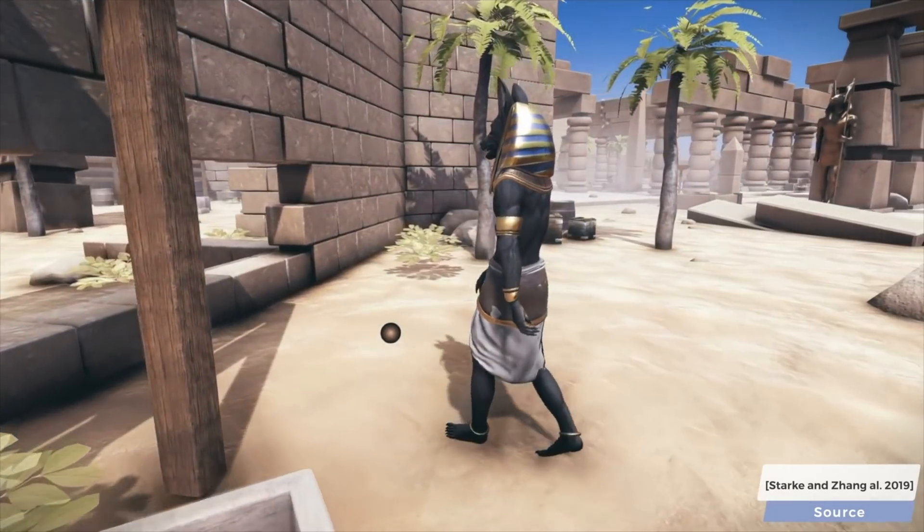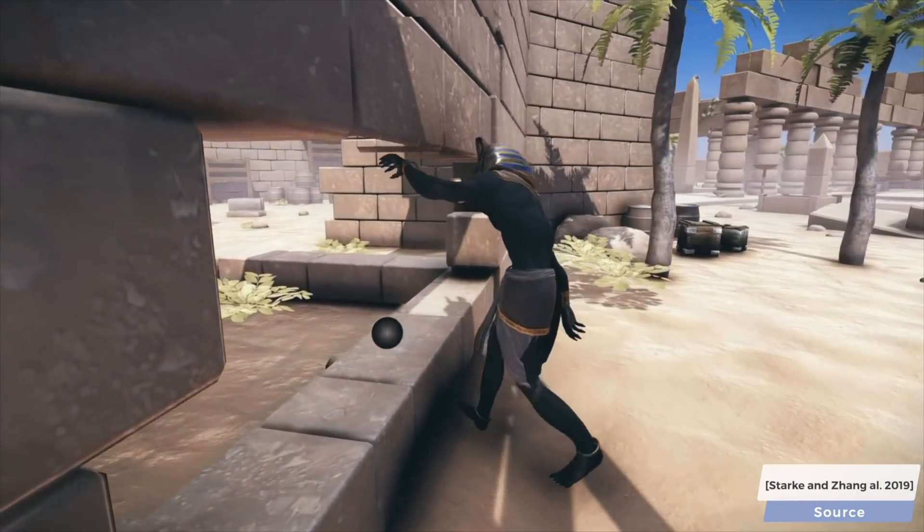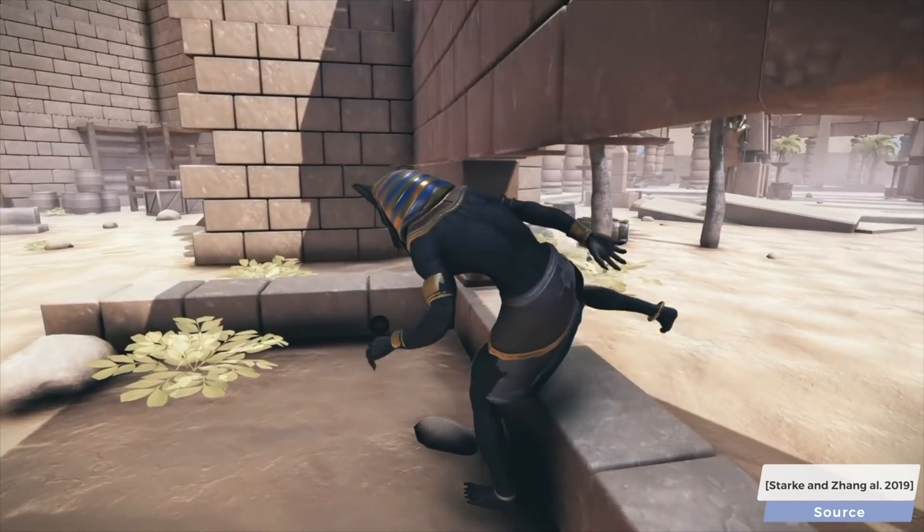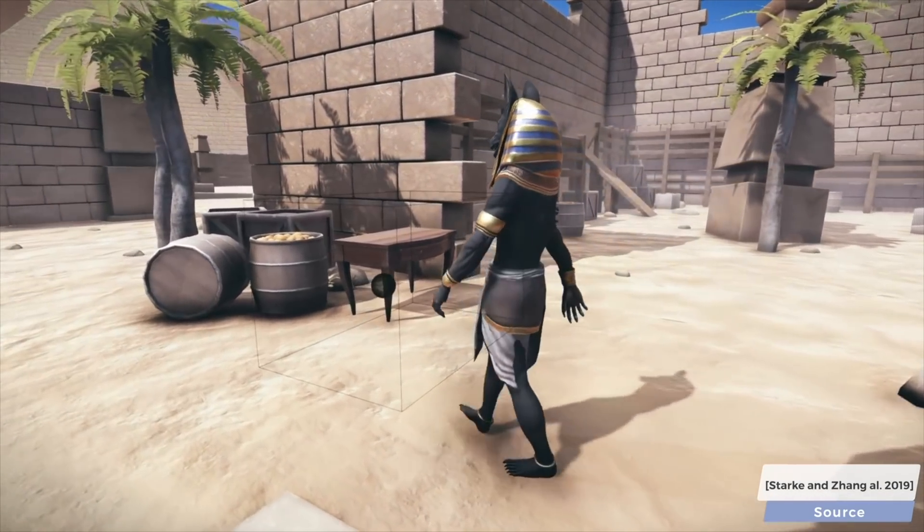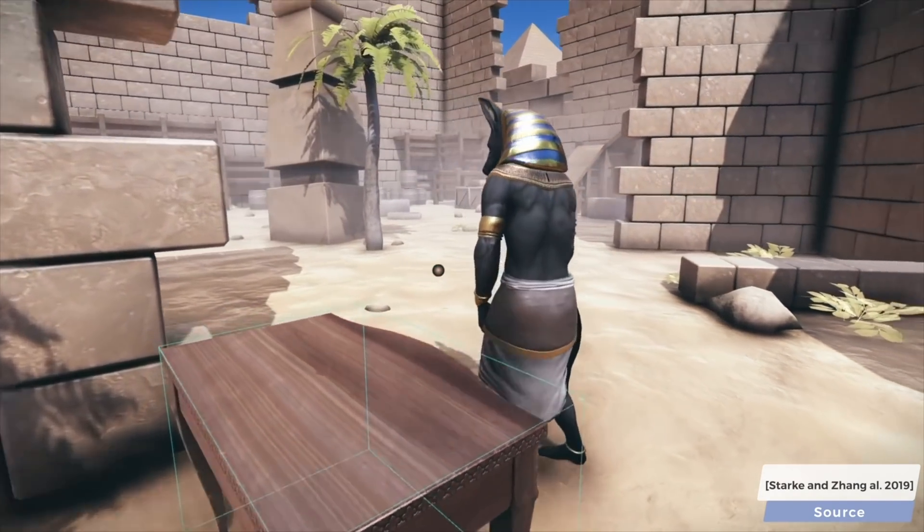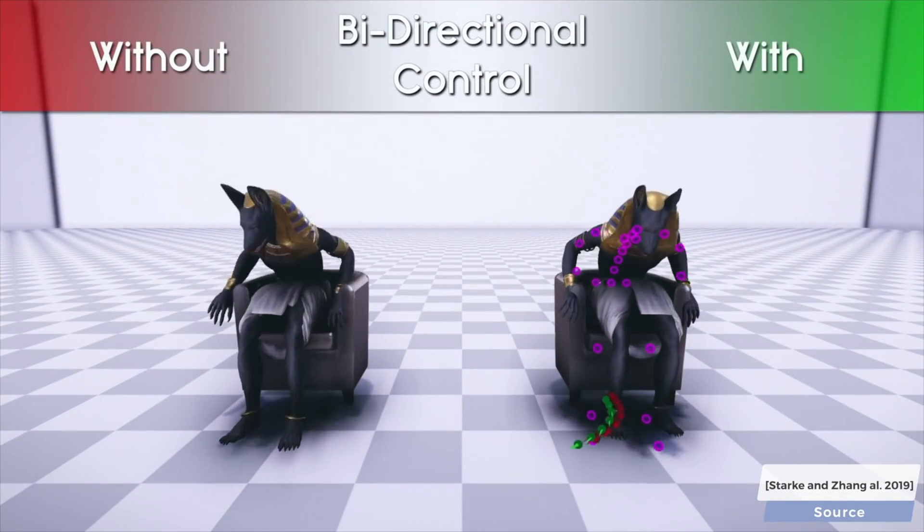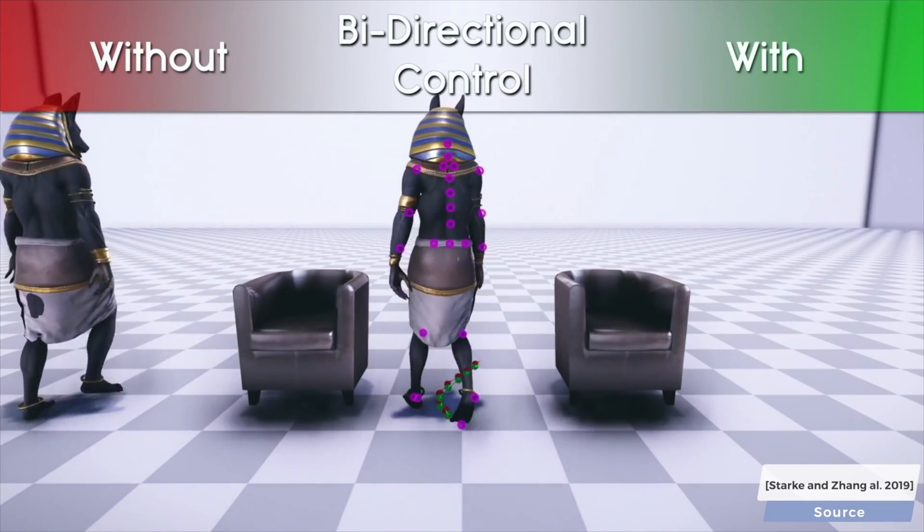Later, bipeds were also taught to maneuver through complex geometry and sit in not one kind of chair, but any chair regardless of geometry. This already sounds like science fiction. So, are we done, or can these amazing techniques be further improved?